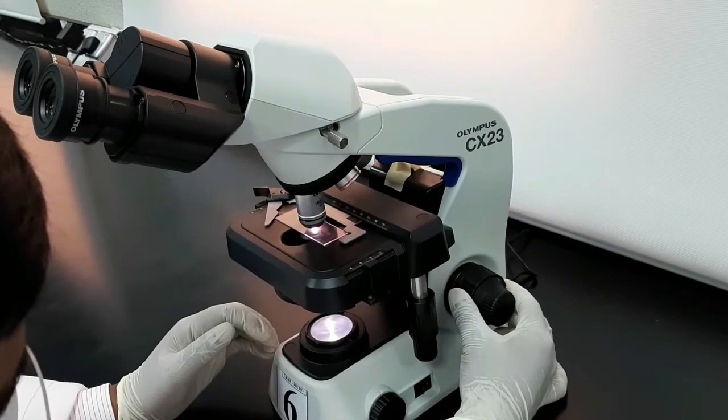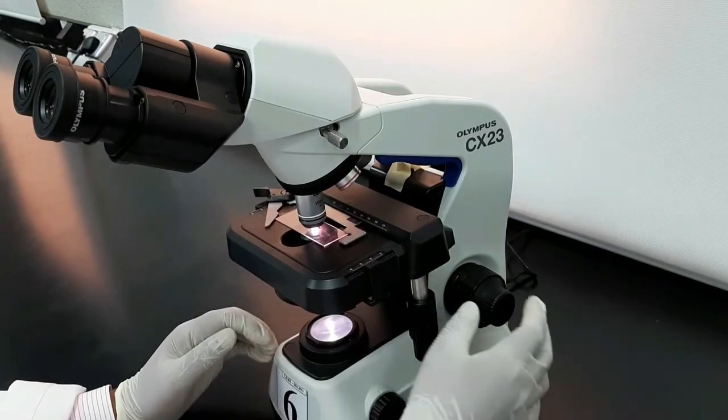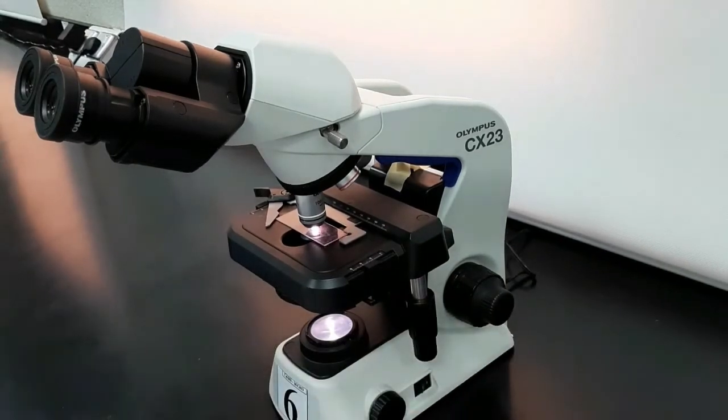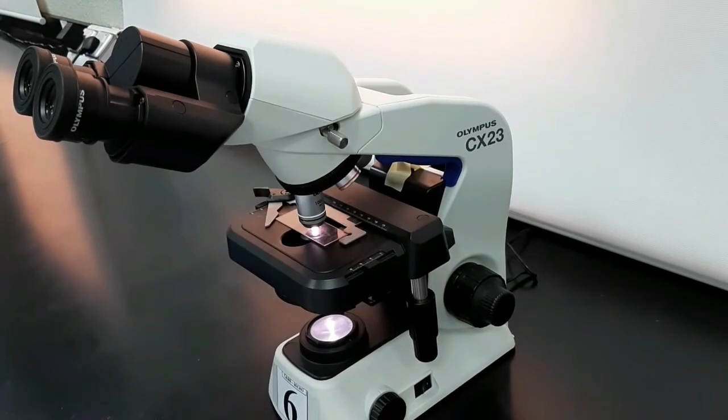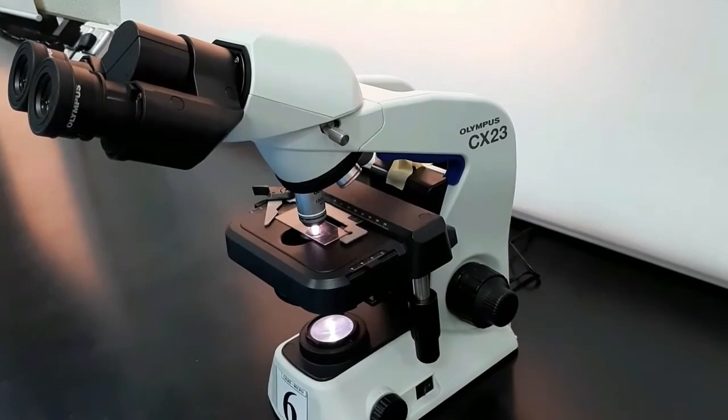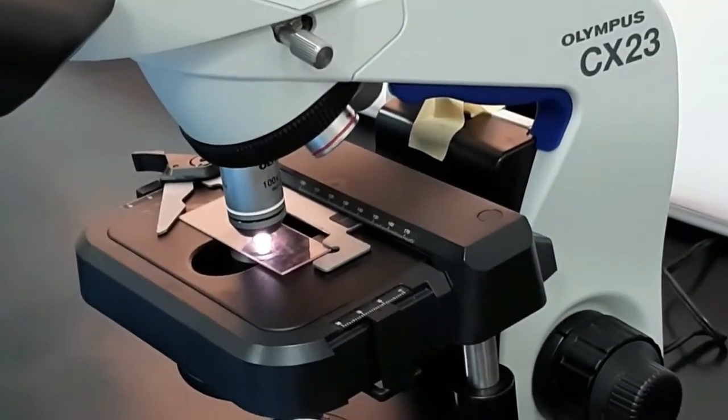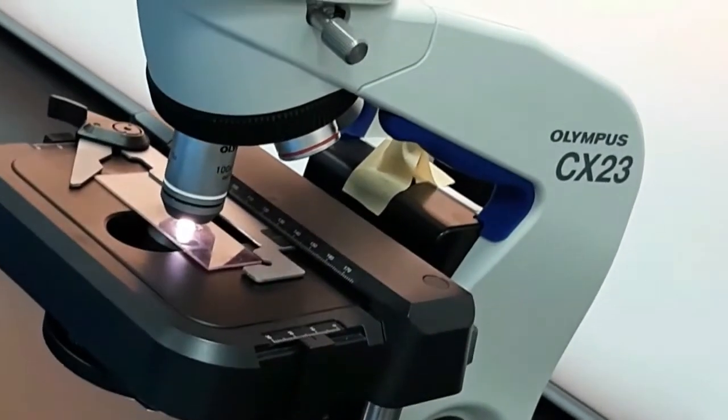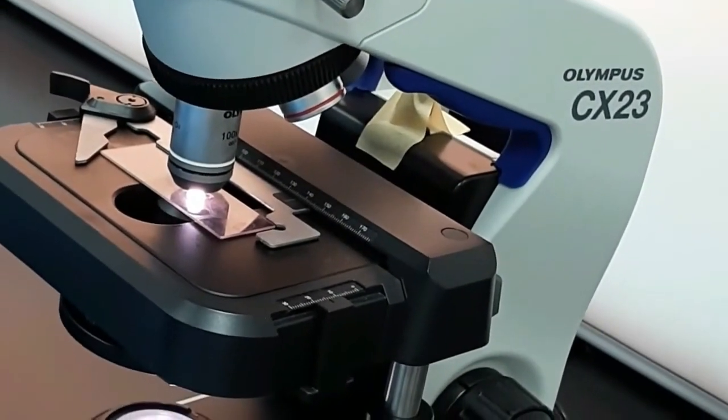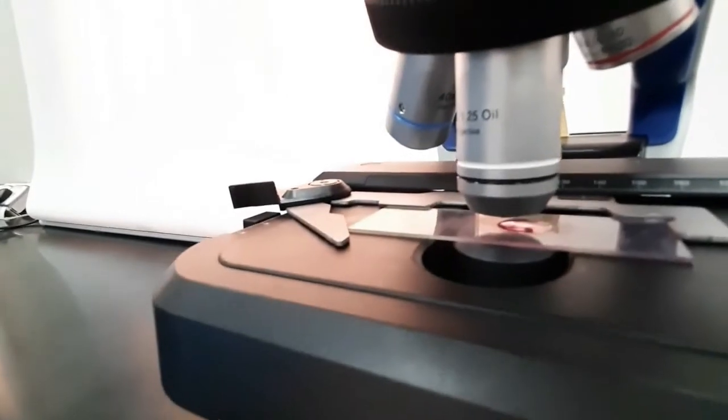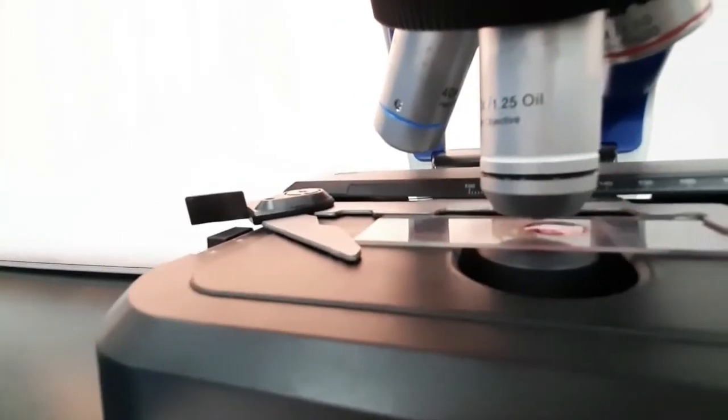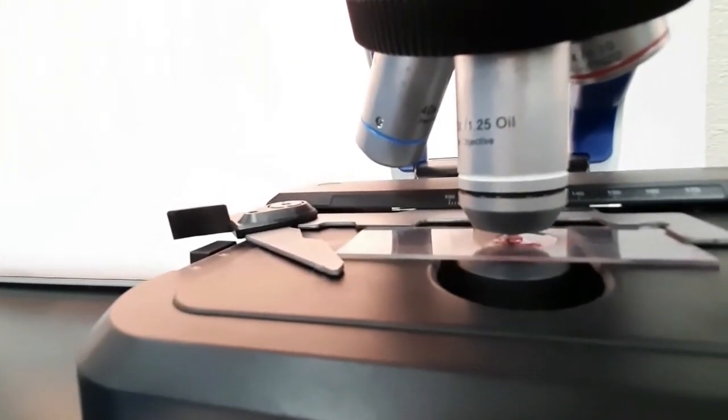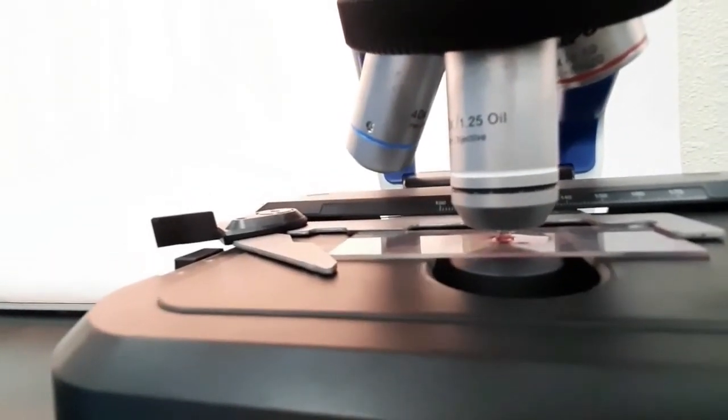Once the oil touches the lens, adjust the coarse focus a little bit downwards and you can see a clear connection of oil between the lens and the slide. With the light, it is a little difficult to see the connection of the oil between the lens and the slide, so I will switch off the light so you can clearly see that connection. Now you can see a clear connection.